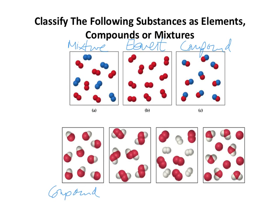The next example looks a bit more complicated. We've got two reds bonded together, and each one is bonded to a white — two reds each bonded to a white, repeated throughout. All the particles in here are identical: two reds each bonded to one white. So this is also a compound.